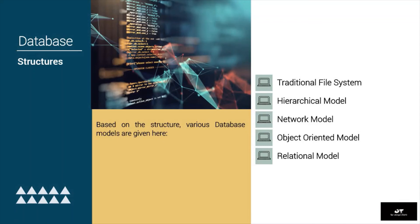Network model: it represents complex logical relationships and allows many-to-many relationships among its nodes. It is more like a graph than a tree in structure. A network model consists of a collection of records interrelated to each other through relationships. Child nodes can have multiple parent nodes, and parents can have multiple child nodes. The structure thus supports one-to-one, one-to-many, and many-to-many relationships through its nodes.